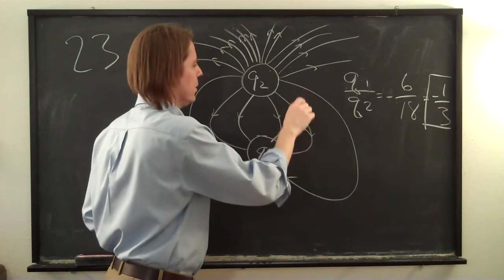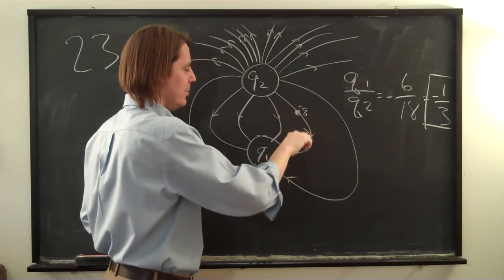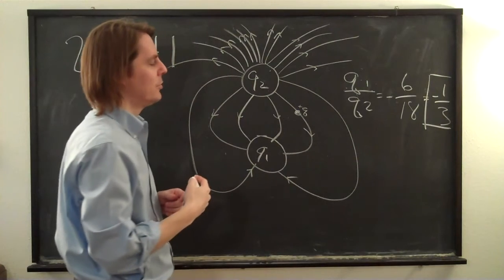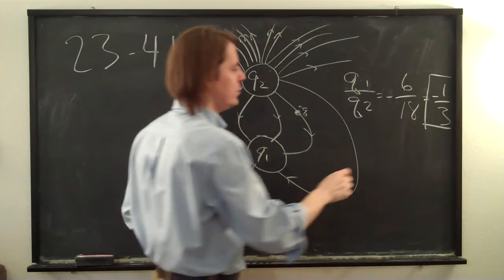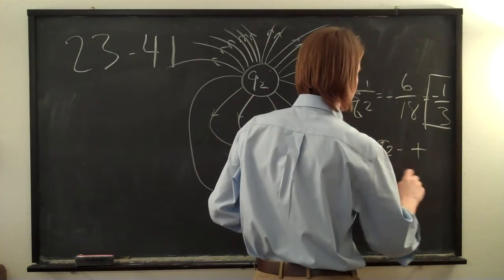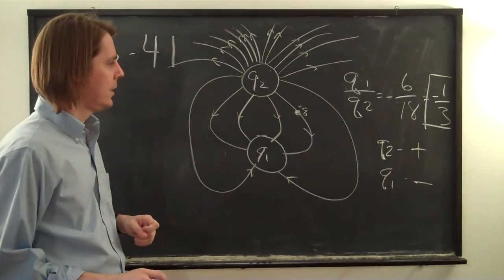That little positive test charge, Q, must fly this direction because there's the arrowhead. It must go this way, meaning it's being repelled by Q2. It's being repelled by Q2. Q2 must be positive. So Q2 is positive and Q1, therefore, must be negative because the lines are going to Q1. And that's it.